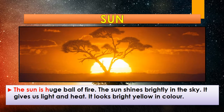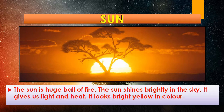The sun is a huge ball of fire. The sun shines brightly in the sky. It gives us heat and light, and it also looks bright yellow in color.